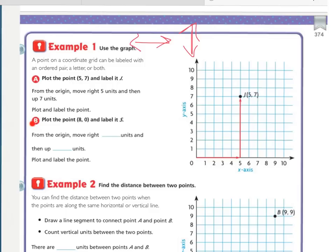Now, for B, they want you to plot the point 8, 0, and label it S. From the origin, or 0, 0, that's the origin, move right how many units? The x-coordinate, that's our first number going left to right, is 8. So, we need to go 8 units to the right, and then our second number tells us to go up or down. It's a positive number, so we're moving up, but how many units are we moving up?